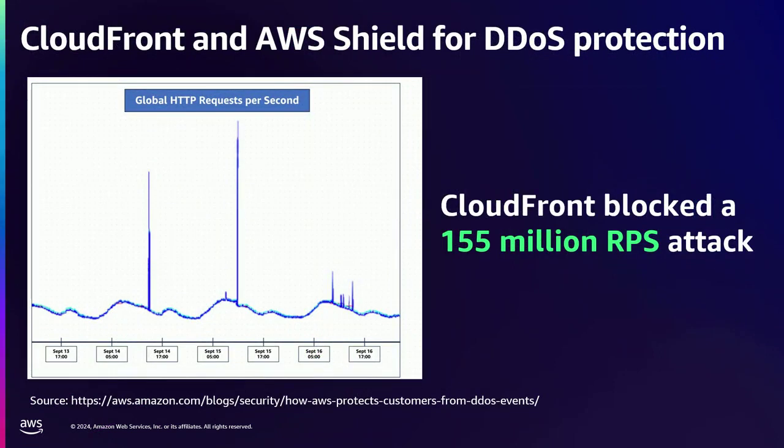CloudFront gives you better resiliency from DDoS attacks, with really amazing Layer 7 DDoS mitigation capabilities — since a large quantity of DDoS attacks today are at Layer 7. There's a blog available that shows a graph of two massive spikes of 150 million RPS in traffic against CloudFront distributions. CloudFront automatically detected and blocked these attacks before they caused any disruption to customers.